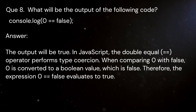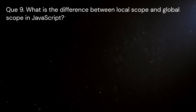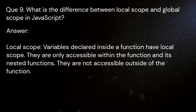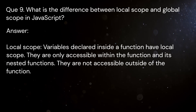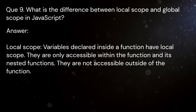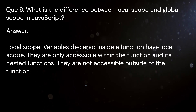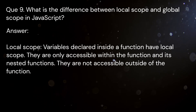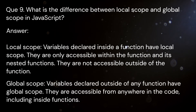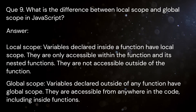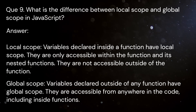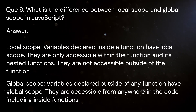Question 9: What is the difference between local scope and global scope in JavaScript? Answer: Local scope — variables declared inside a function have local scope; they are only accessible within the function and its nested functions, and are not accessible outside of the function. Global scope — variables declared outside of any function have global scope; they are accessible from anywhere in the code, including inside functions.